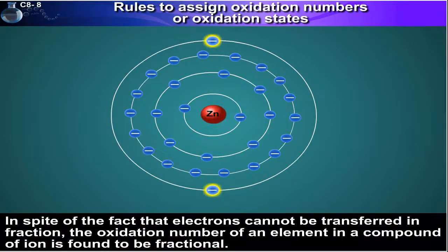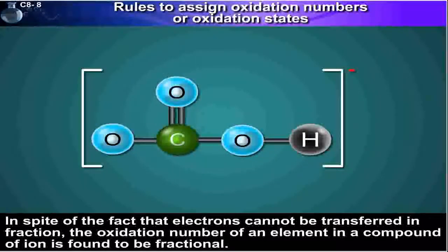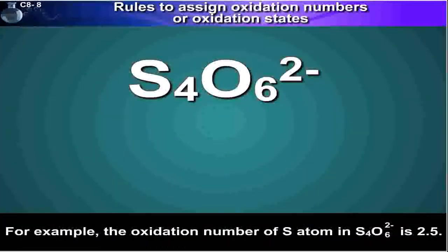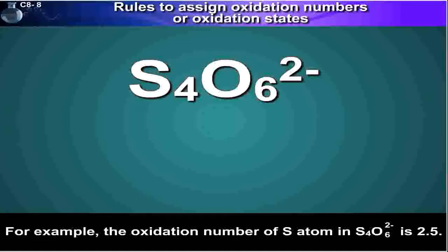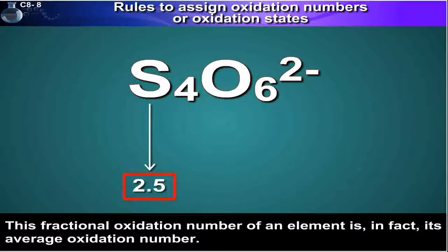In spite of the fact that electrons cannot be transferred in fractions, the oxidation number of an element in a compound or ion is found to be fractional. For example, the oxidation number of sulphur in S₄O₆²⁻ is 2.5. This fractional oxidation number of an element is, in fact, its average oxidation number.